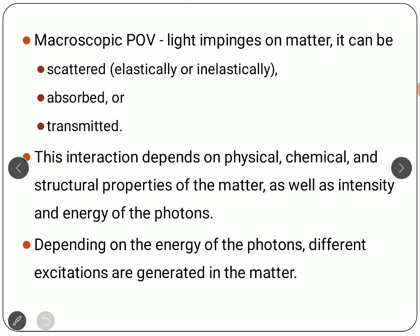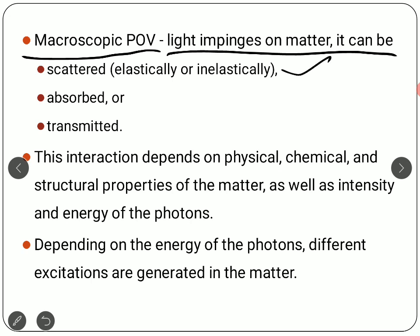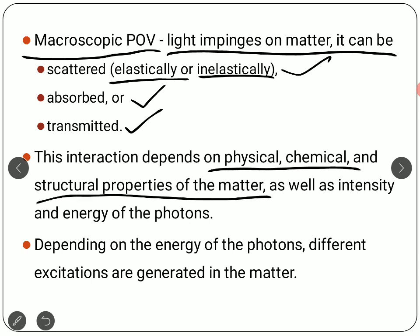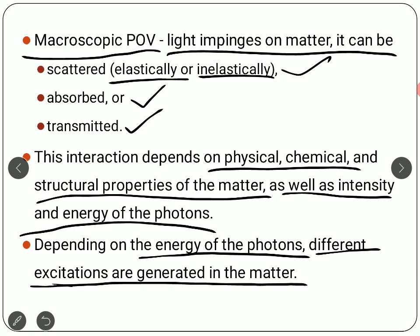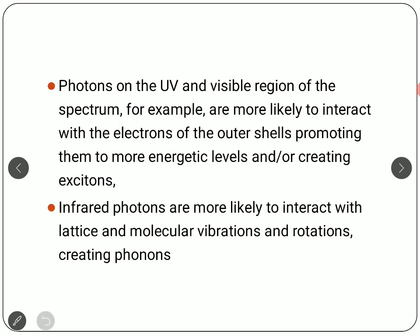From a macroscopic, external point of view: light impinges on matter and when it does, it can scatter — this scattering might be elastic or inelastic — it might be absorbed by the material, or it can be transmitted. This interaction depends on the physical, chemical, and structural properties of the matter, as well as the nature of the incoming radiation, the intensity, and the energy of the photon. Depending on the photon energy, different excitations are generated — you might have excitation of the electrons, or the radiation might just pass through, generating excitons or phonons.